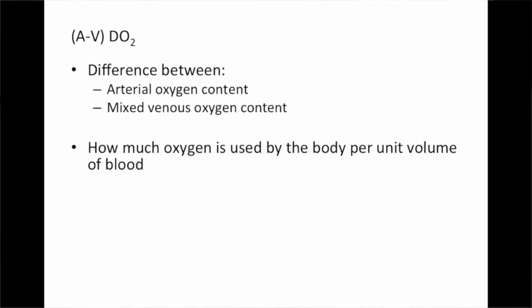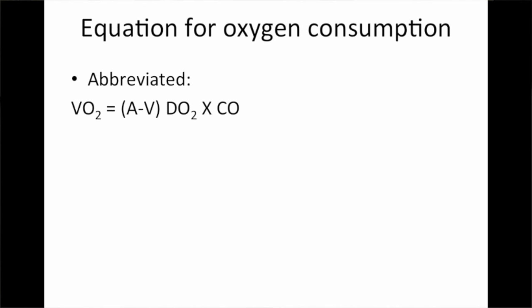The next equation is called the AVDO2 — the difference between the arterial oxygen content and the mixed venous oxygen content. This is important as we build toward the equation for oxygen consumption. It helps us understand how much oxygen is used by the body per unit volume of blood, with a normal value of 5 mL of oxygen per 100 mL of blood.